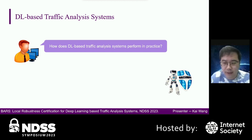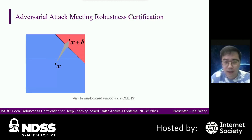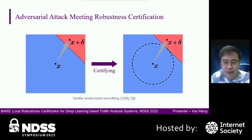How does deep learning-based traffic analysis systems perform in practice? In fact, they frequently suffer from adversarial attacks due to the vulnerability of deep learning. Given a sample, attackers can add a slight perturbation to the sample, and then it will be classified into the wrong class. Many studies focused on robustness certification to analyze and improve the robustness of the operating models. It can define a robustness region around the sample where any perturbations cannot change the classification result.